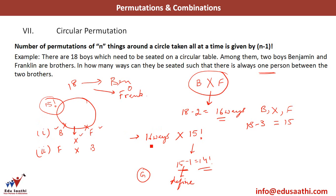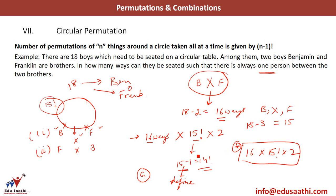So we have 16 into 15 factorial. I will also multiply this by 2 because I have 2 cases: Ben here and Frank there, or Frank here and Ben there. My final answer is 16 multiplied by 15 factorial multiplied by 2. The intuitive way of solving these questions is to keep questioning yourself — in how many ways can I place X? This makes it very intuitive and you will always end up with the right answer.